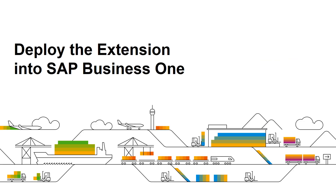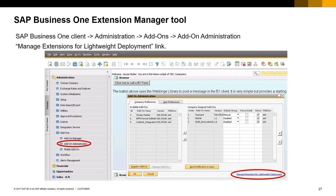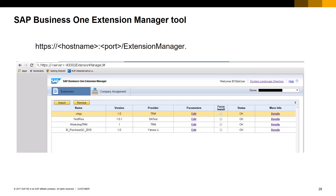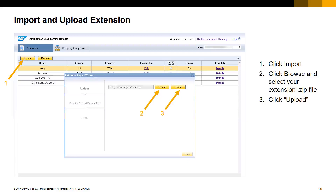Let's now deploy the extension we created into SAP Business One. To get the extension deployed, we will use the SAP Business One Extension Manager. To access this tool, go to SAP Business One Client > Administration > Add-ons > Add-on Administration menu. On the Add-on Administration form, click on the Manage Extensions for Lightweight Deployment link at the bottom of the form. The SAP Business One Extension Manager tool opens in a browser. You first need to log in with the B1 site user credentials, and the list of already deployed lightweight extensions will be shown. You can also directly access this tool with the URL provided on this slide. In the Extension Manager tool, press Import, browse to the extension registration zip file created in the previous section, and press Upload.